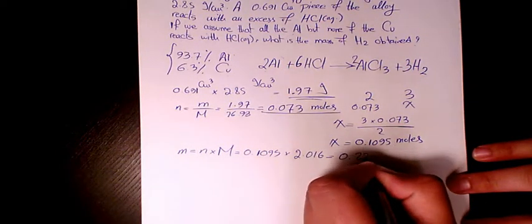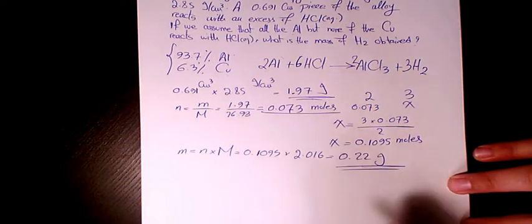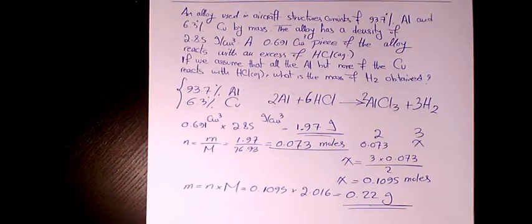Molar mass of H2 is 2 times 1.008, so which is 2.016. That makes it 0.22 grams. That's the mass of hydrogen produced during this chemical reaction. That's the final answer.